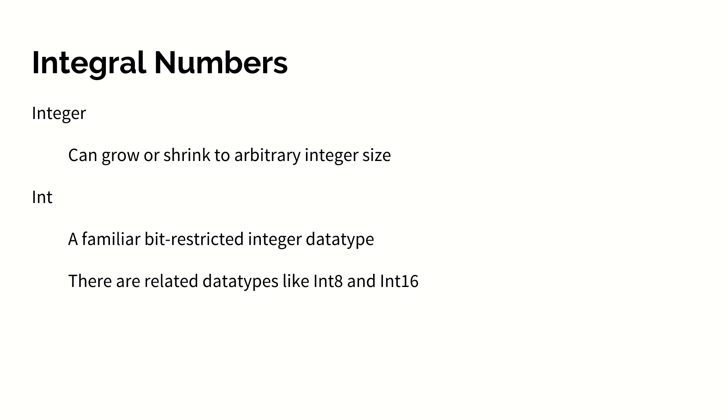First off, we'll talk about some basic numeric data types. Numeric data types are split into two categories, the first of which is integral numbers. Integral numbers include int and integer. Int is the more familiar bit-restricted data type that you've probably encountered in languages like C. It has a bounded range of values. Integer is a higher-level construct that can grow or shrink to arbitrary size and can hold any number.